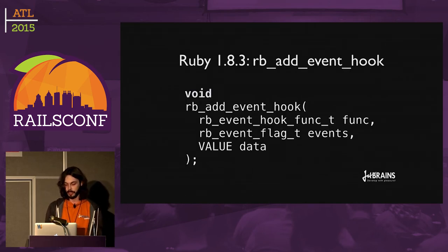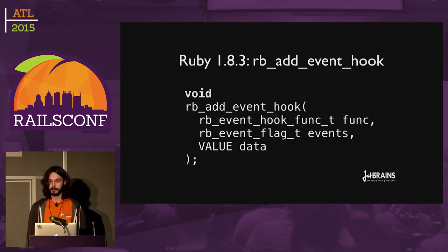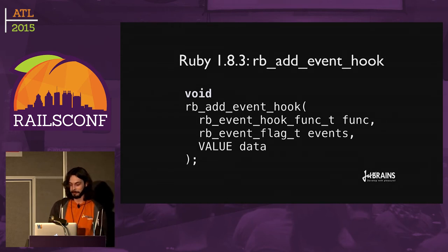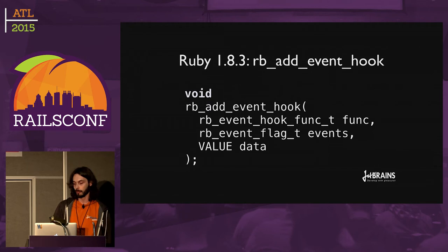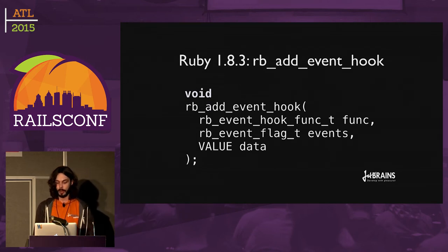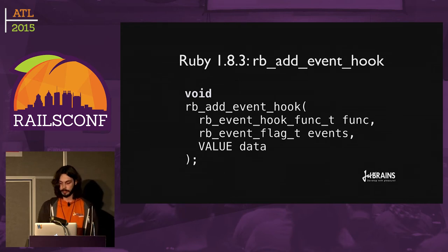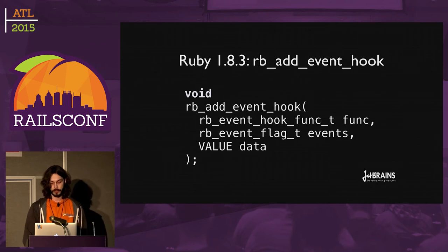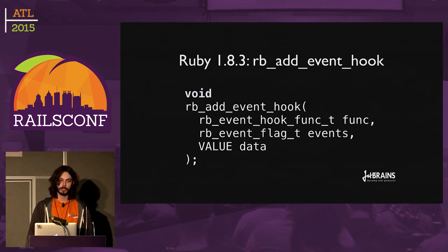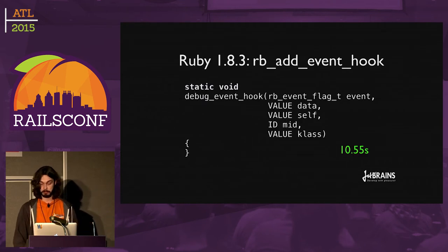Ruby 1.8.3 introduces a new method called rb_add_event_hook. You may notice the code doesn't look like Ruby — because that's C. You can specify the function, basically a callback that gets called. And one big difference is that you can also specify events. So for example, if you don't need a line event, you can just specify that you want all other events, and that would make execution faster. With an empty callback but using all events, it takes about 10 and a half seconds. Not bad.